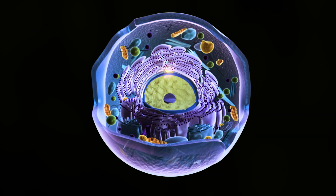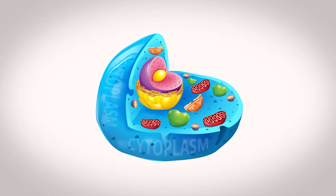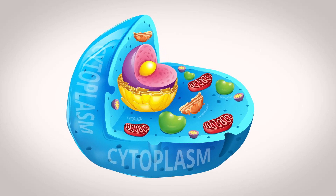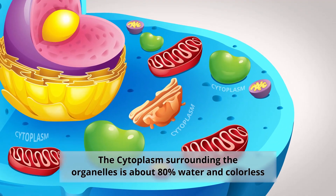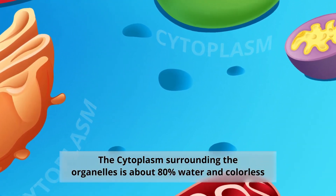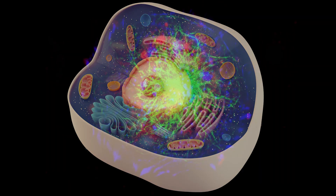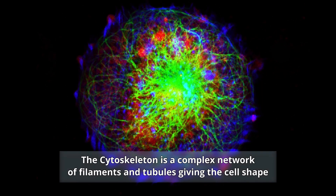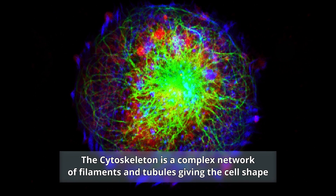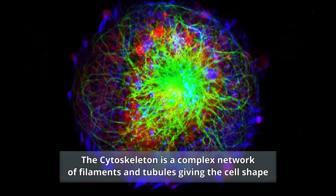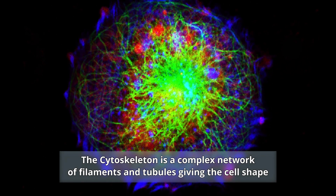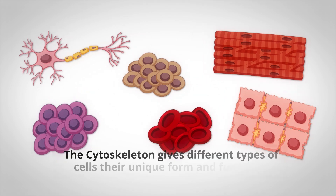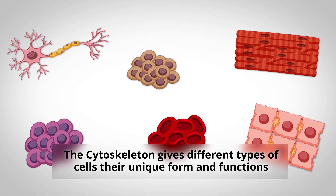Inside the cell, a gel-like substance called the cytoplasm is enclosed within the cell membrane that houses all of the organelles. The cytoplasm is about 80% water and usually colorless. Extending throughout the cytoplasm is the cytoskeleton, a complex network of interlinking filaments and tubules. The cytoskeleton is what gives the cell a shape and can be very different depending on the organism and cell type.